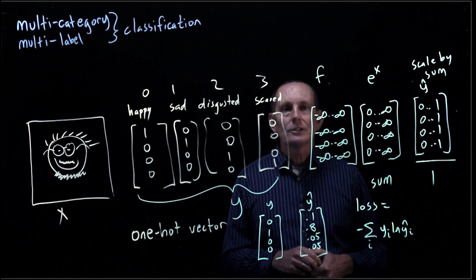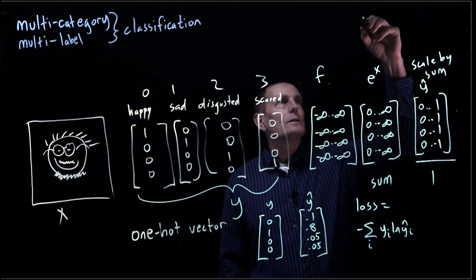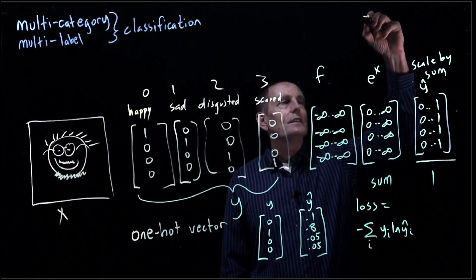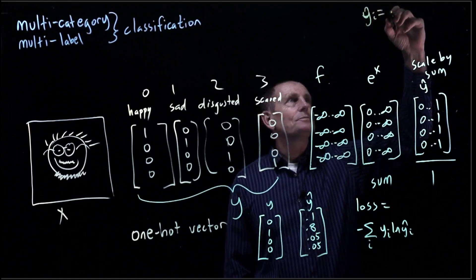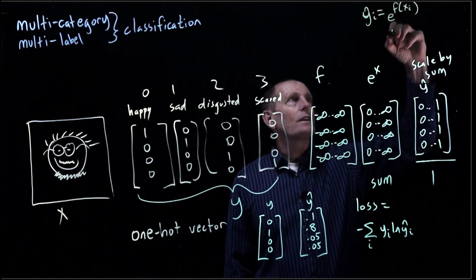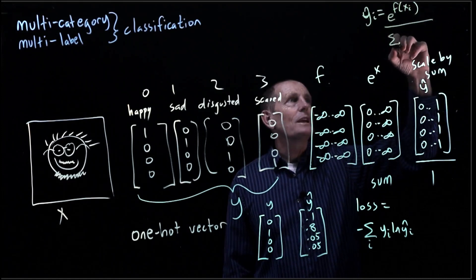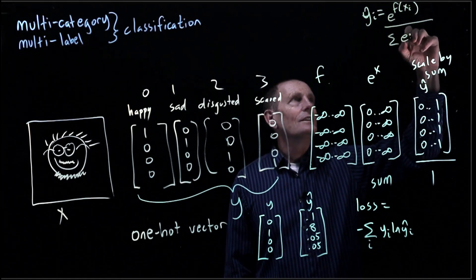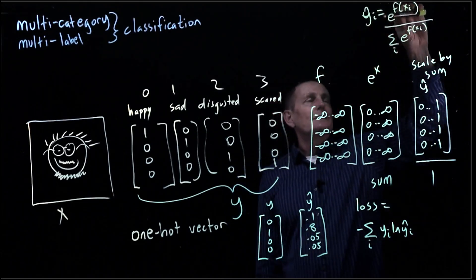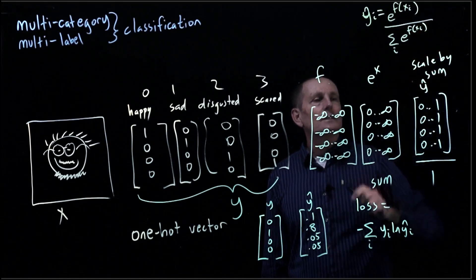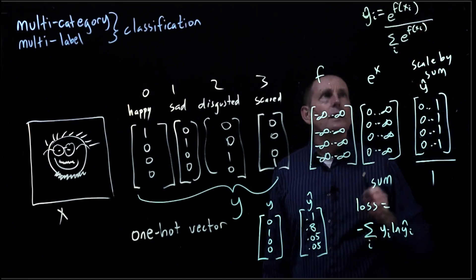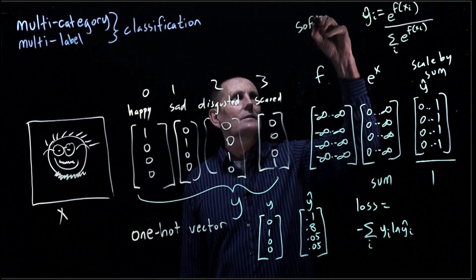This function — where y-hat_i equals e to the f(x_i) divided by the summation of e to the f(x_i) — is called a softmax. The bottom part is just normalizing, and the top part takes the exponential. There's a name for this: it's called a softmax.